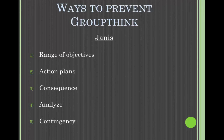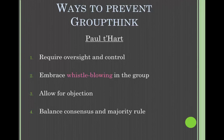Paul Pahart was another researcher who believed that Janis' recommendations inadvertently erode collegiality and foster group factionalism. He recommended four general recommendations: require oversight and control, embrace whistleblowing in the group, allow for objection, and balance consensus and majority rule.